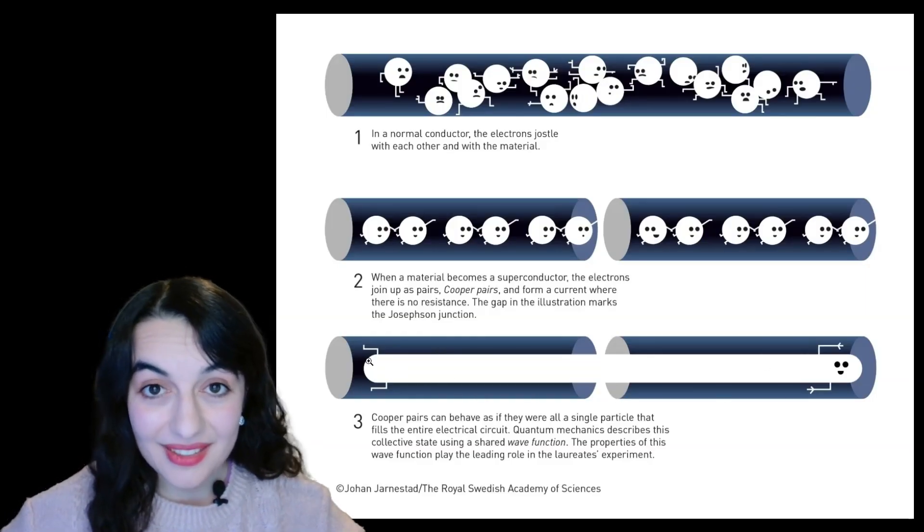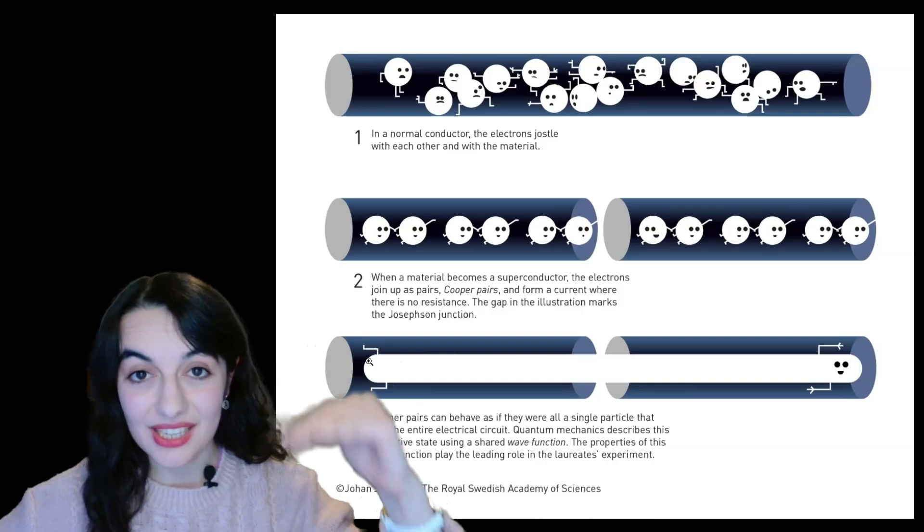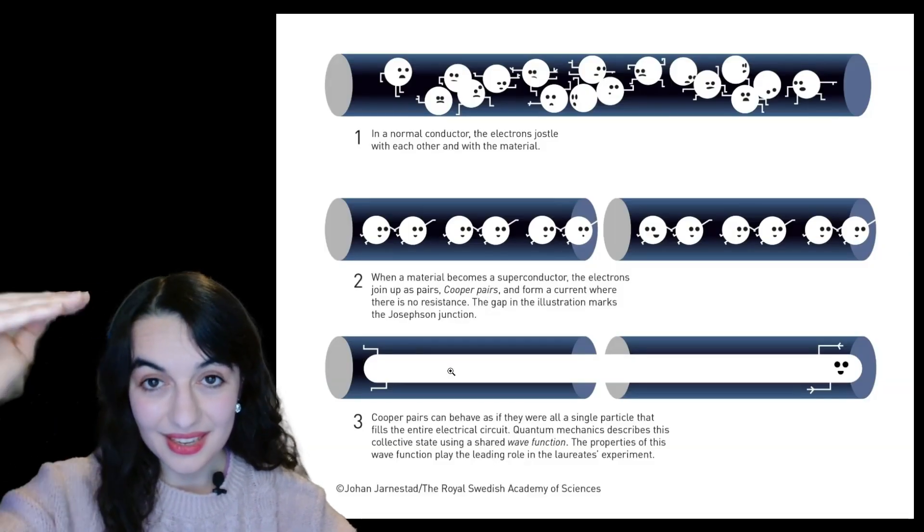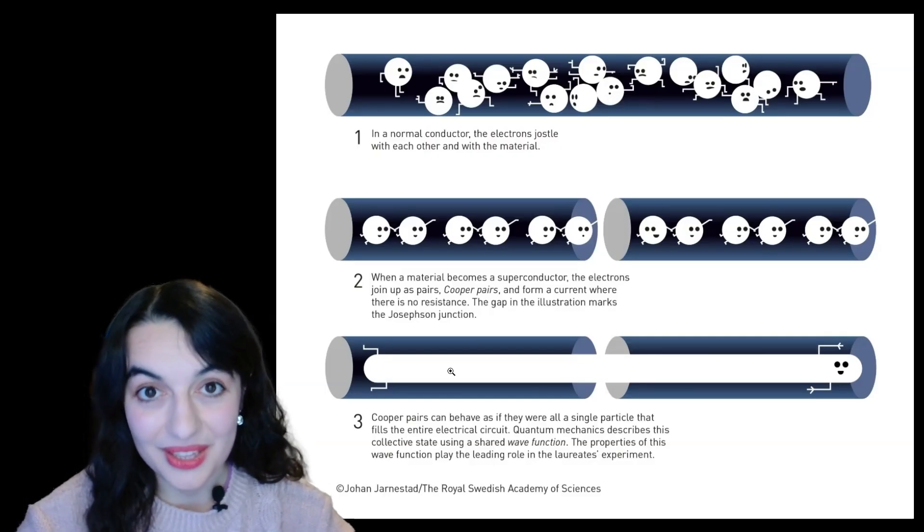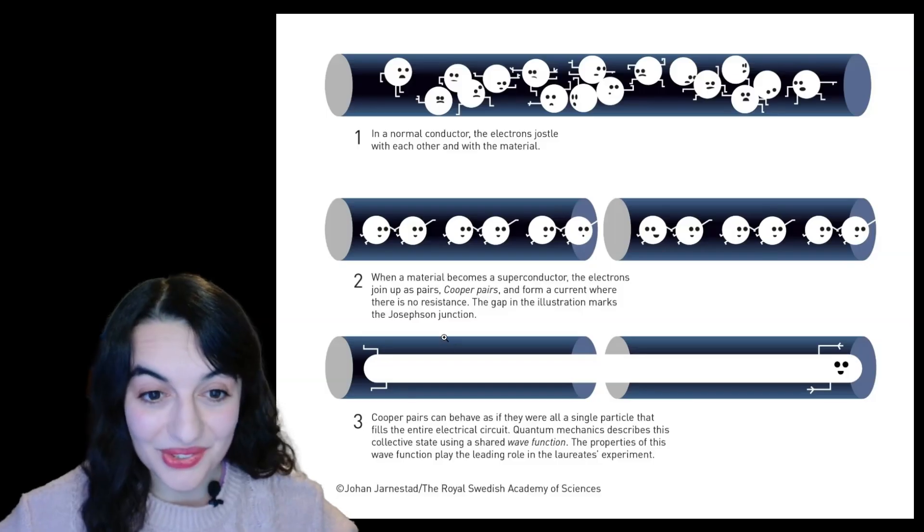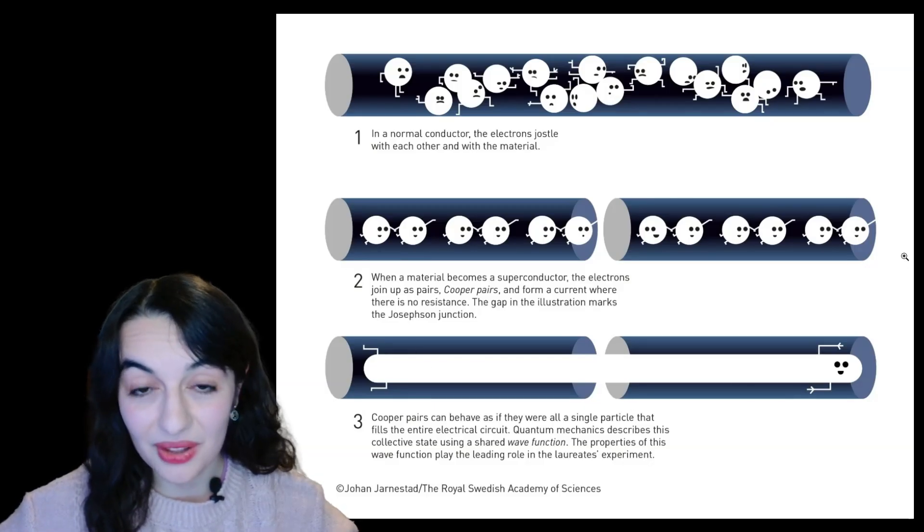Another effect that they demonstrated was the quantization of energy levels, which means having separate energy levels in a similar way to how an atom will have jumps in energy levels. So these are the key quantum phenomena that the experimentalists demonstrated. They showed that you can really have this quantum effect even with billions of parts.